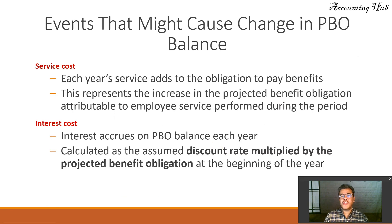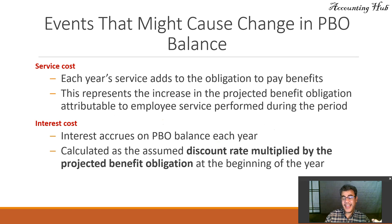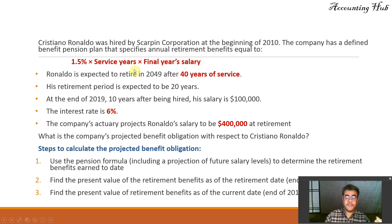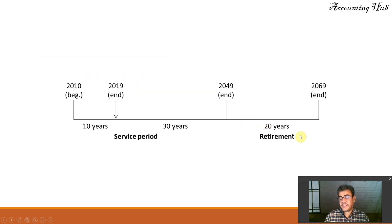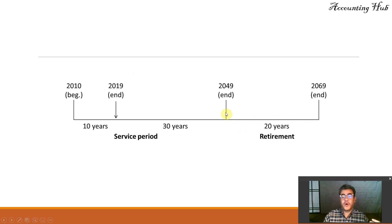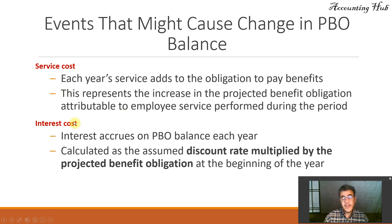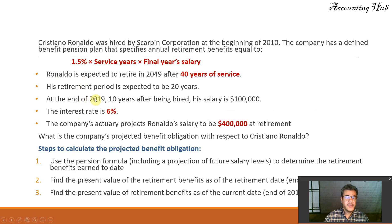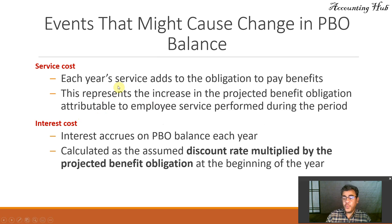Events that might cause changes in the PBO balance: Service costs — he will be working one additional year and will therefore receive more at retirement, because the pension formula is based on service years. For example, he will be receiving $5,000 more per year, so we calculate what that $5,000 per year is worth at retirement date and what it is worth now — that is the service cost. Interest cost is simply the beginning balance multiplied by the interest rate, here 6%. These two components occur every single year.